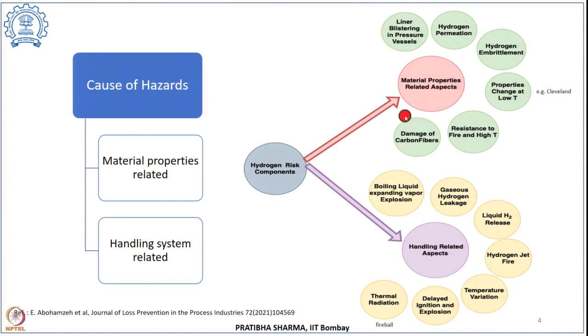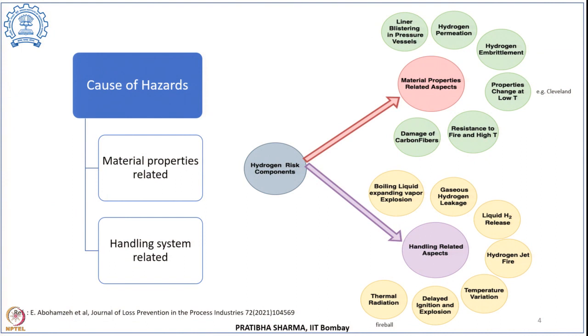Hazardous issues can be broadly classified into two classes: those arising because of material property, or those because of hydrogen handling. These hazards that lead to different accidents can be evaluated either through experimental techniques or computational techniques. Experimental techniques provide valuable insight but are expensive and sometimes impossible, especially for large-scale incidents. CFD techniques are widely used as predictive tools to understand the influencing parameters and the physical phenomena that could result in hazard risk components.